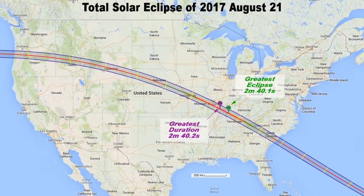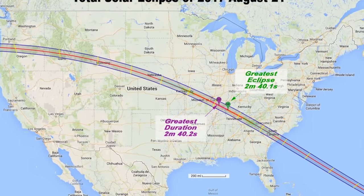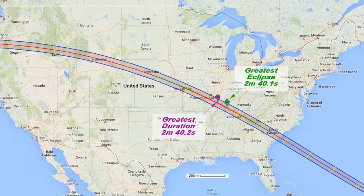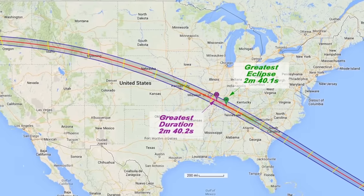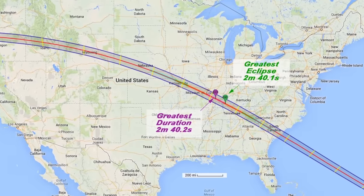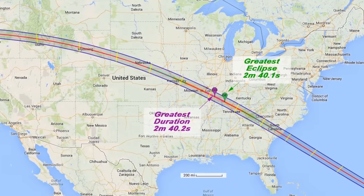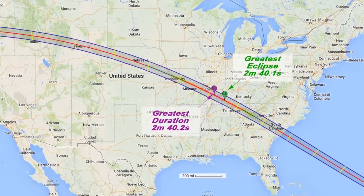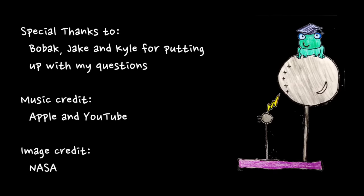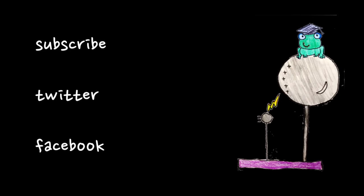This is what the path of the upcoming eclipse in 2017 will look like. Only those within that narrow band will be able to see the total solar eclipse. That's it for sweet facts about eclipses. For more fun physics, you can subscribe, find me on Twitter or Facebook.